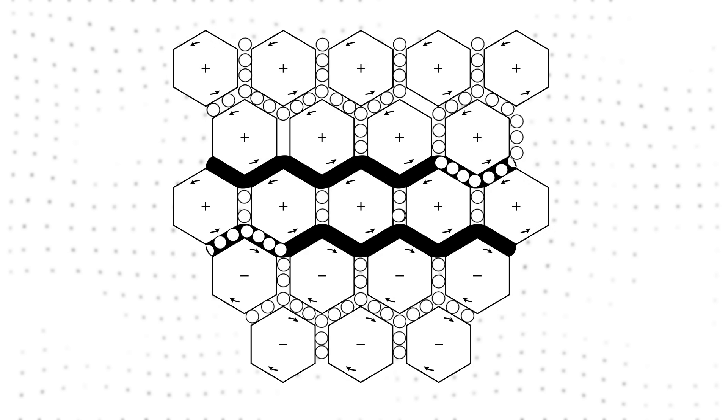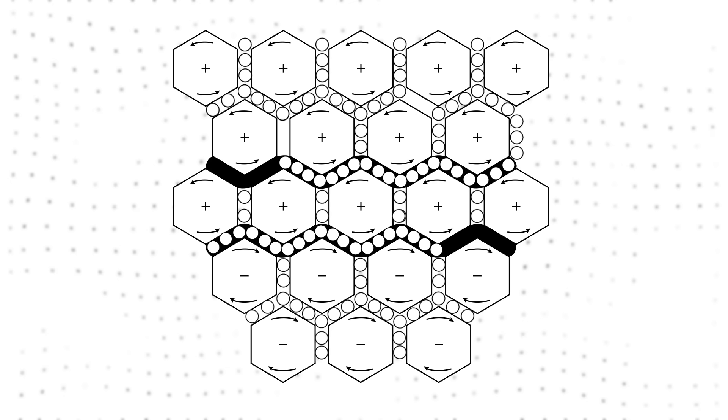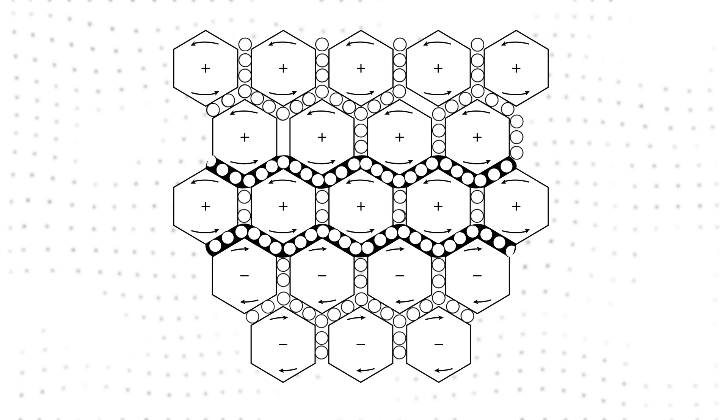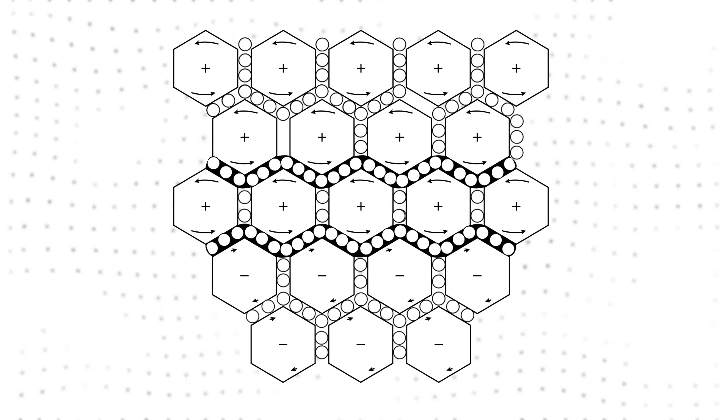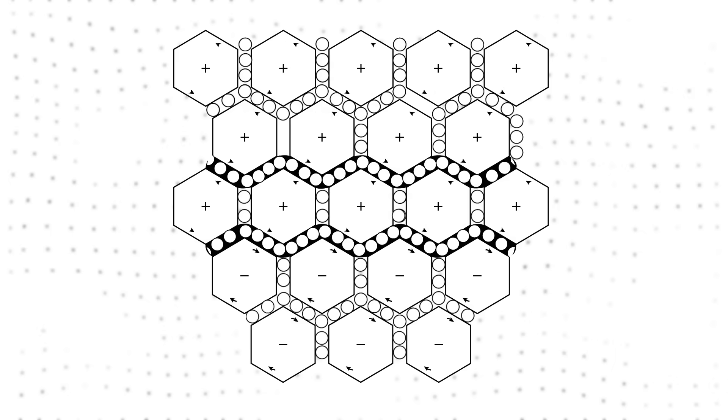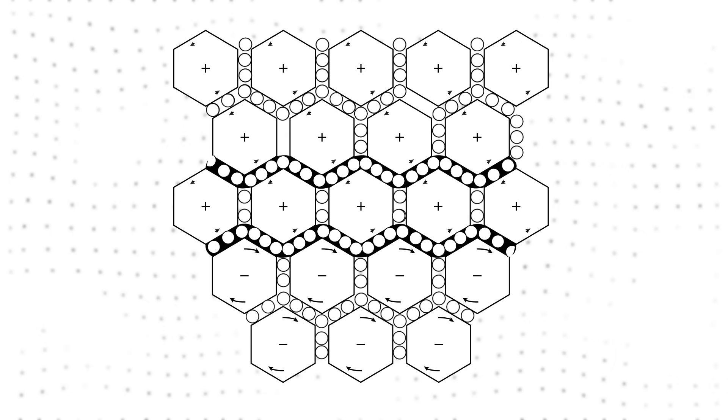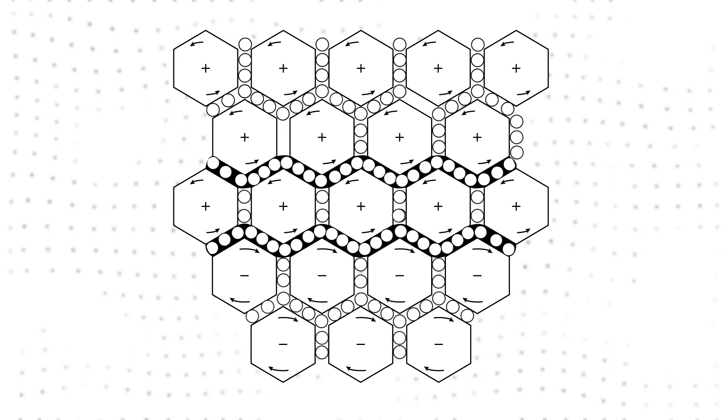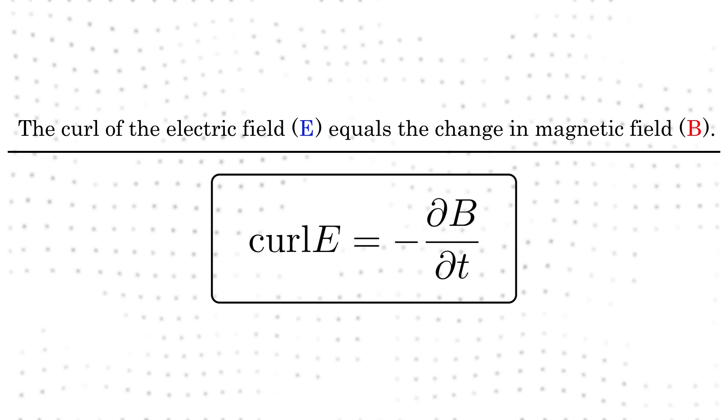In this diagram, the change in the speed of the vortices corresponds to the change in the strength of the magnetic field. This would cause the ball bearings to rotate in response to the changing speeds of the adjacent vortices. Since rotation corresponds to the curl, we get the third Maxwell's equation. The curl of the electric field equals the change in magnetic field.